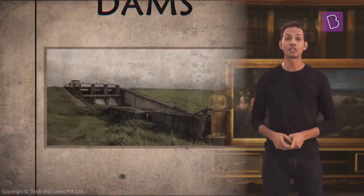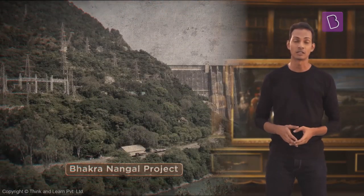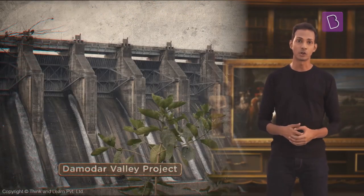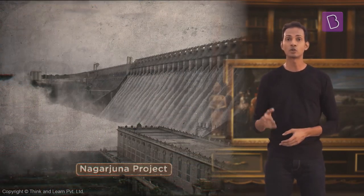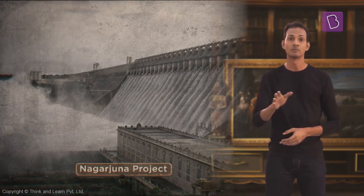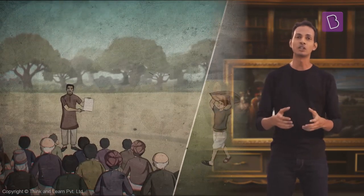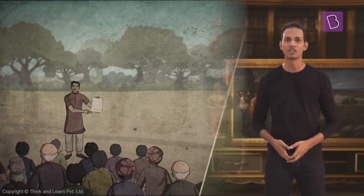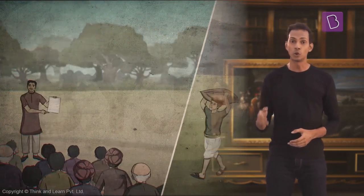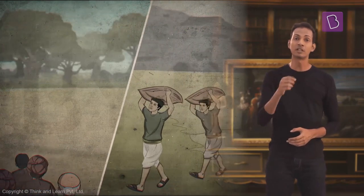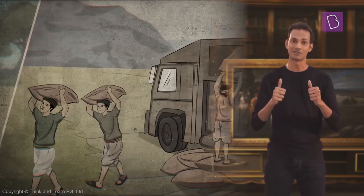Examples of such projects include the Bhakra Nangal project, the Damodar Valley project, the Tungabhadra project and the Nagarjuna project, among others. Farmers were taught modern agricultural methods. The government also provided good quality seeds and fertilizers to farmers. This plan was successful.